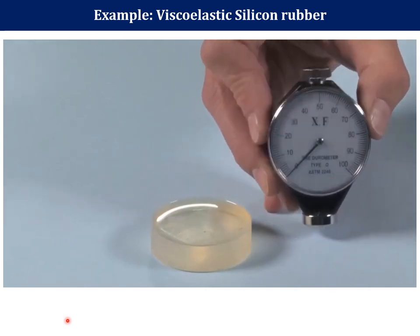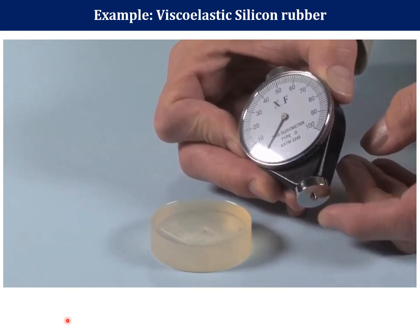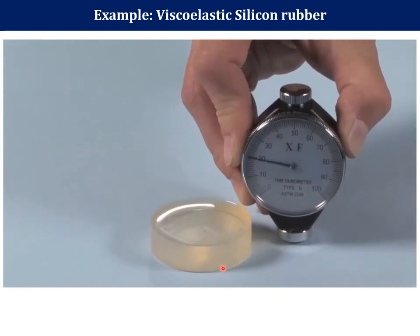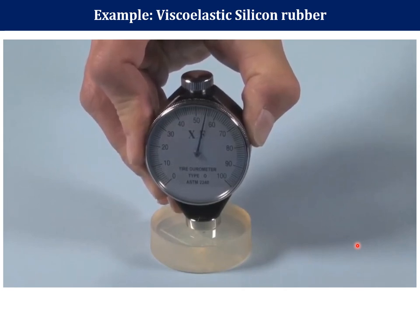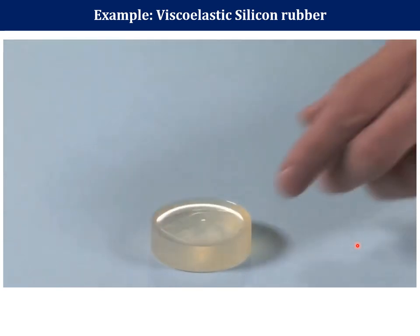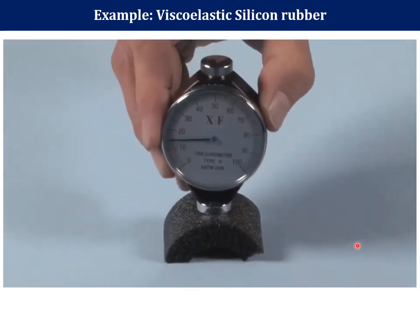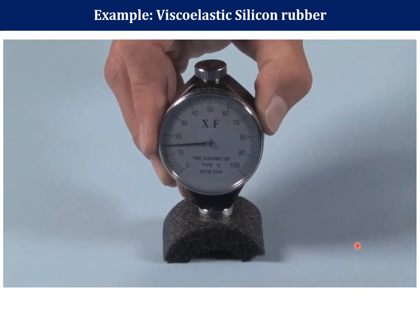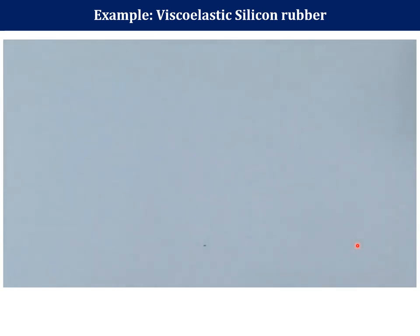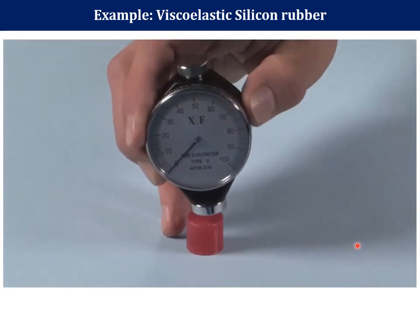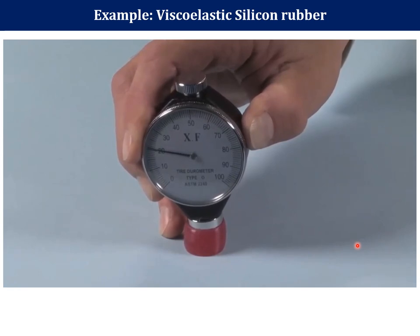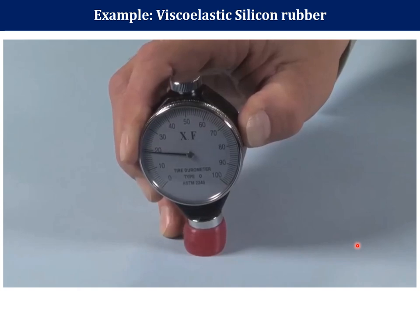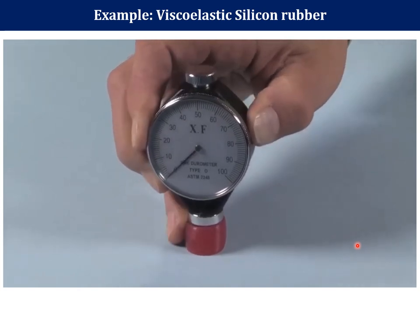One way to measure the stiffness of rubber is with a durometer. This device pushes on the rubber and sees how much it resists denting — the more it resists, the higher the reading and the harder the rubber. Ordinary silicone rubber resists denting strongly — it's hard with a reading of 55 units — and that reading doesn't change with time. A softer rubber obtains a lower hardness reading that also doesn't change with time. But with viscoelastic silicone rubber, the reading varies with time — this material is harder on short timescales than on long timescales. The resistance to denting gradually decreases as the material relaxes over time, showing softer and softer behaviour.